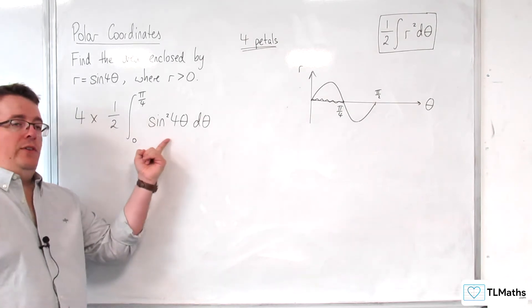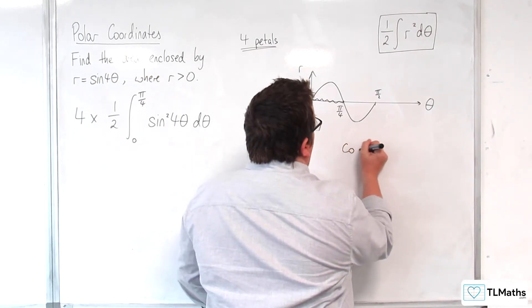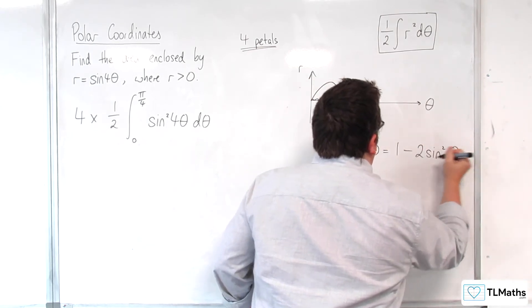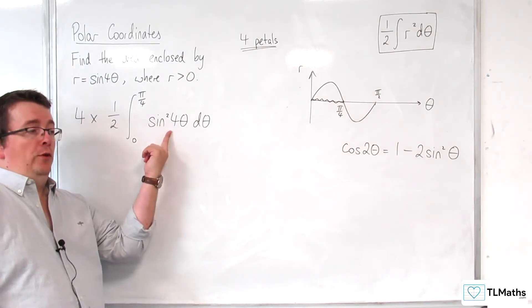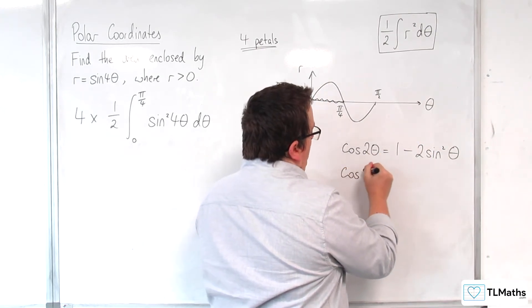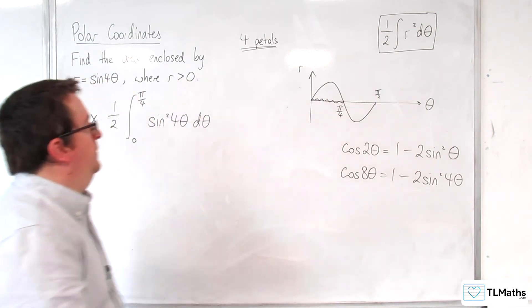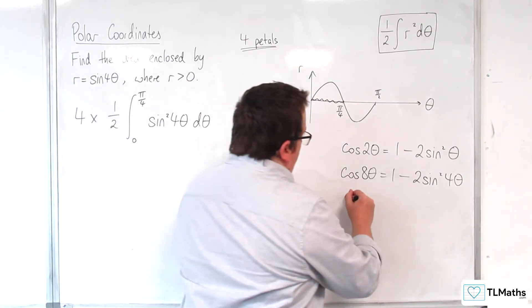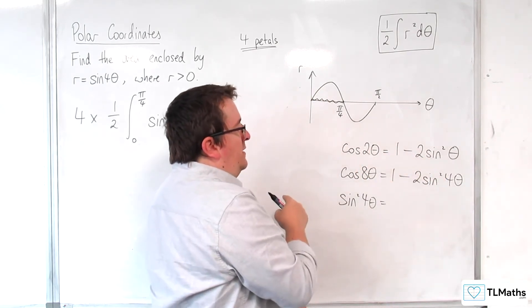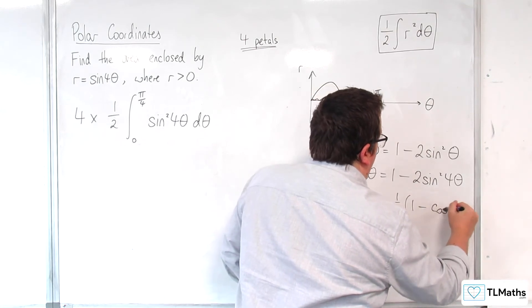Now, in order to integrate sine squared, we're going to have to use our double angle formula. So, cosine of 2 theta was equal to 1 minus 2 sine squared theta. If we're working with sine squared of 4 theta, then that's got to be 8 theta. So, cosine of 8 theta is equal to 1 minus 2 sine squared 4 theta. By rearranging, the sine squared 4 theta must be equal to 1 half of 1 take away cosine 8 theta.